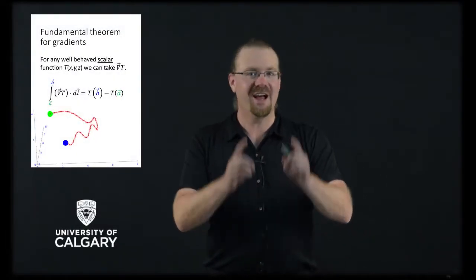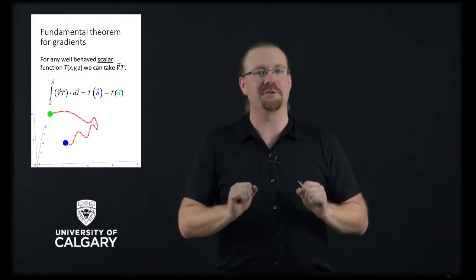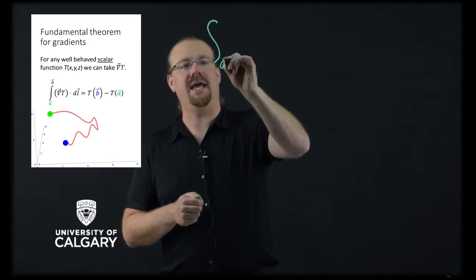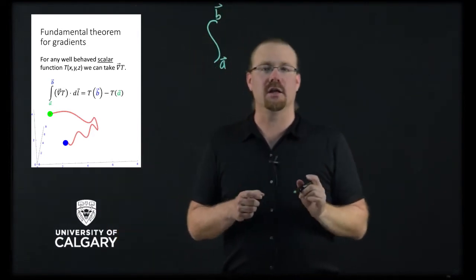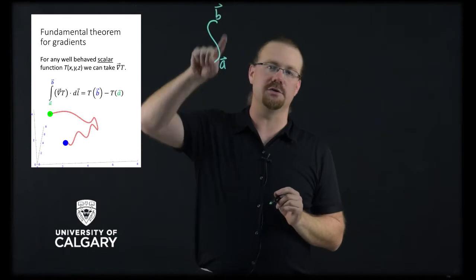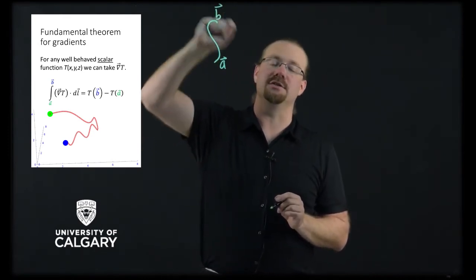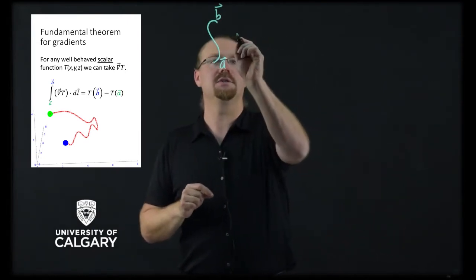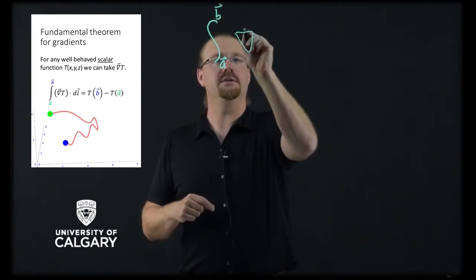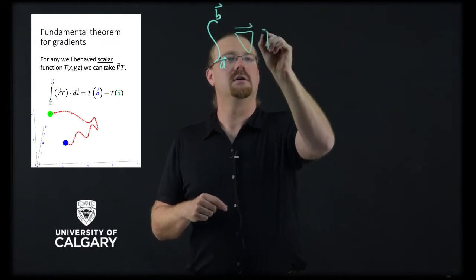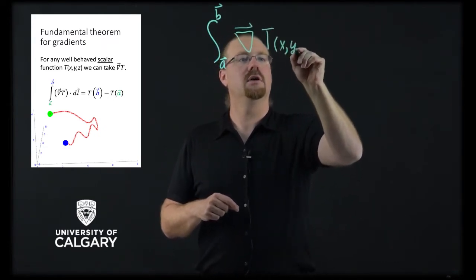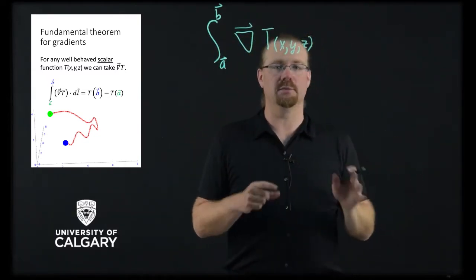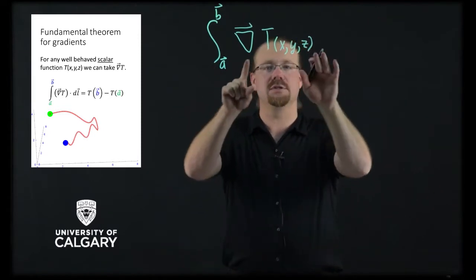We've looked at the fundamental theorem of calculus. Now let's look at the fundamental theorem of gradients and see what we notice. We're going to take an integral from a to b. Note that unlike with the fundamental theorem of calculus, where these were just scalar constants, these are constants that are vectors — one particular point in space to another particular point in space. And we're going to take this integral of the gradient of T, which is a function of x, y, and z. We don't have to do this in Cartesian coordinates — this is true in general — but I'll write it in Cartesian for the most part.